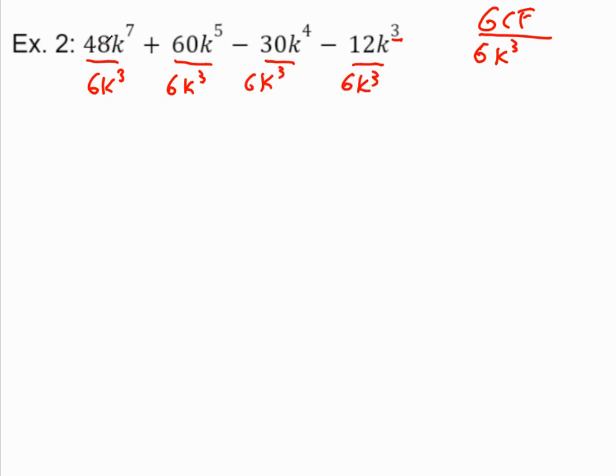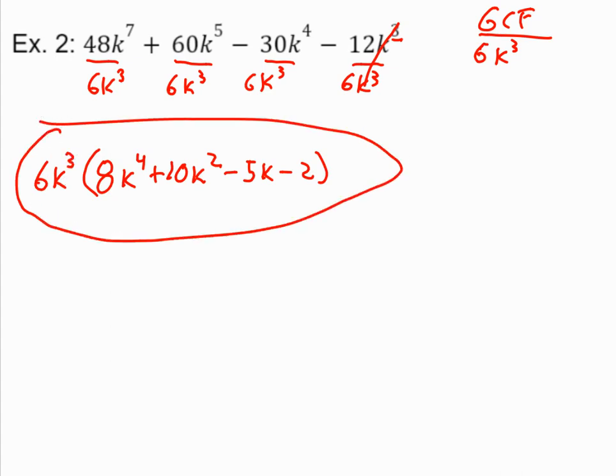Let's work this out. 48 divided by 6 is 8. k to the 7th divided by k to the 3rd. Remember, we subtract. So I get k to the 4th. Plus 60 divided by 6 is 10. k to the 5th divided by k cubed is k squared. Minus 30 divided by 6 is 5. k to the 4th divided by k cubed is just k. And then minus 12 divided by 6 is 2. My k cubes cancel. Here's my result. Put it inside of some parentheses. Put my GCF on the outside. And I've got my answer.